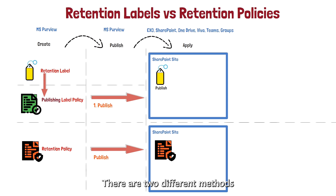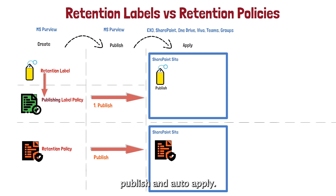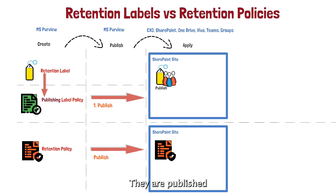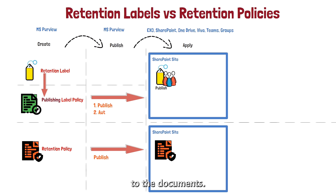There are two different methods of publishing policy — publish and auto-apply. The publish method only delivers the labels to the workload, such as SharePoint. They cannot act on their own.